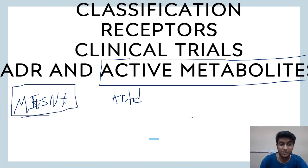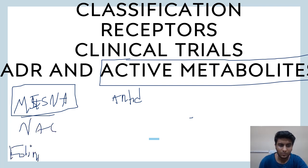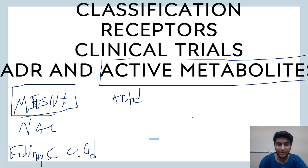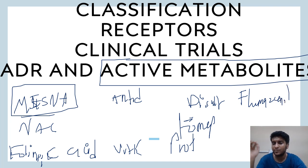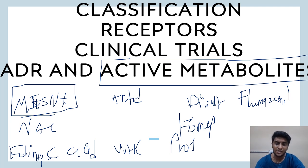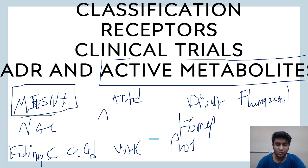Other important antidotes include N-acetylcysteine, folinic acid, 2-mercaptoethane sulfonate, vitamin K, protamine, fomepizole, disulfiram, flumazenil. For heavy metal poisoning — lead, arsenic, mercury — know penicillamine, disodium EDTA, British Anti-Lewisite (dimercaprol). Also know sodium bicarbonate, glucagon for insulin overdose, atropine, physostigmine, and pralidoxime — all examples of antidotes for various conditions.